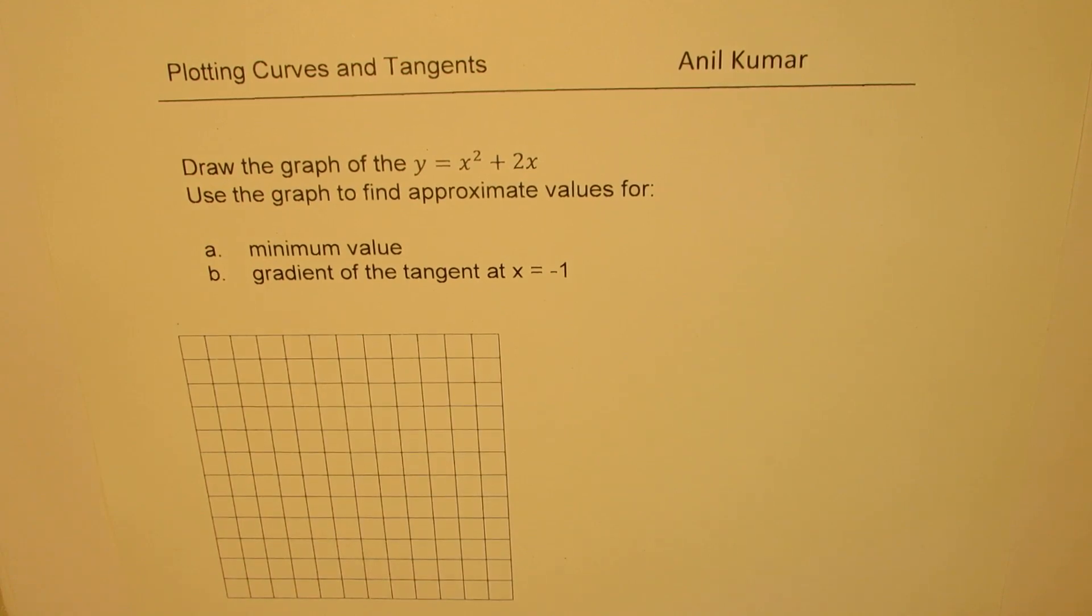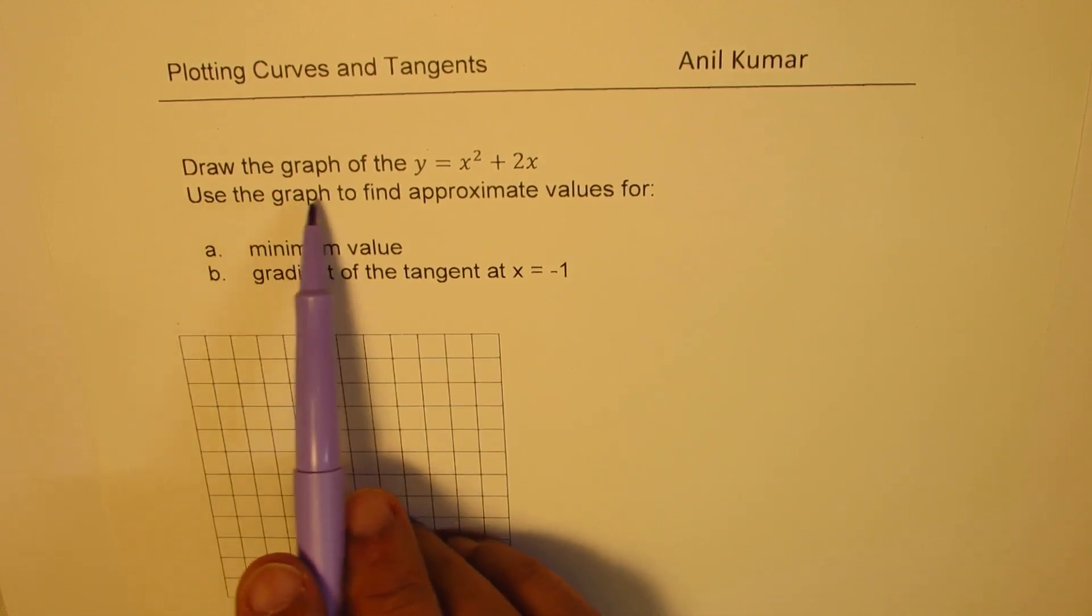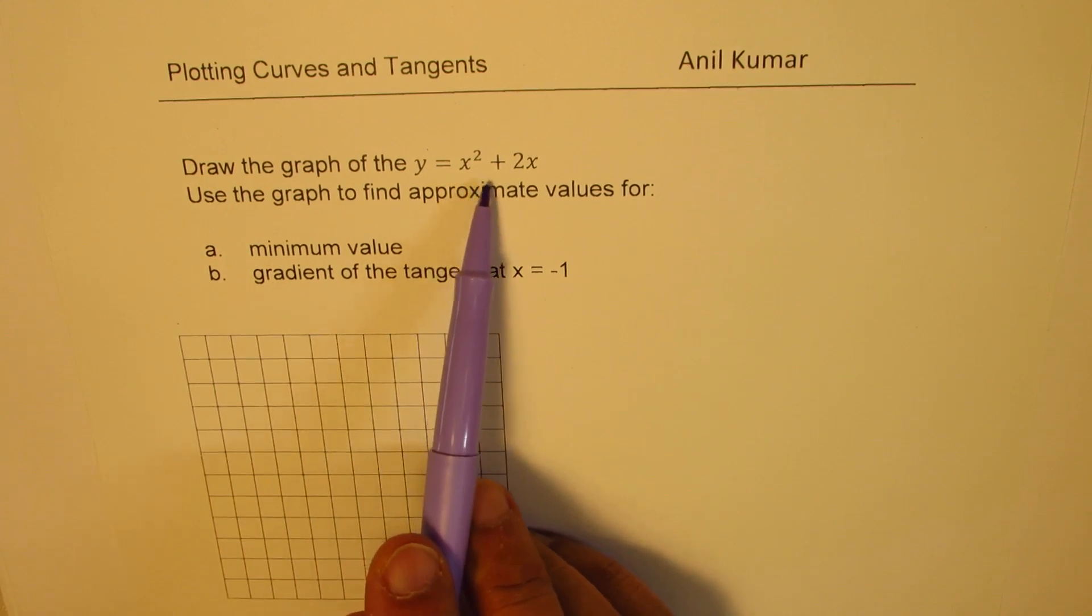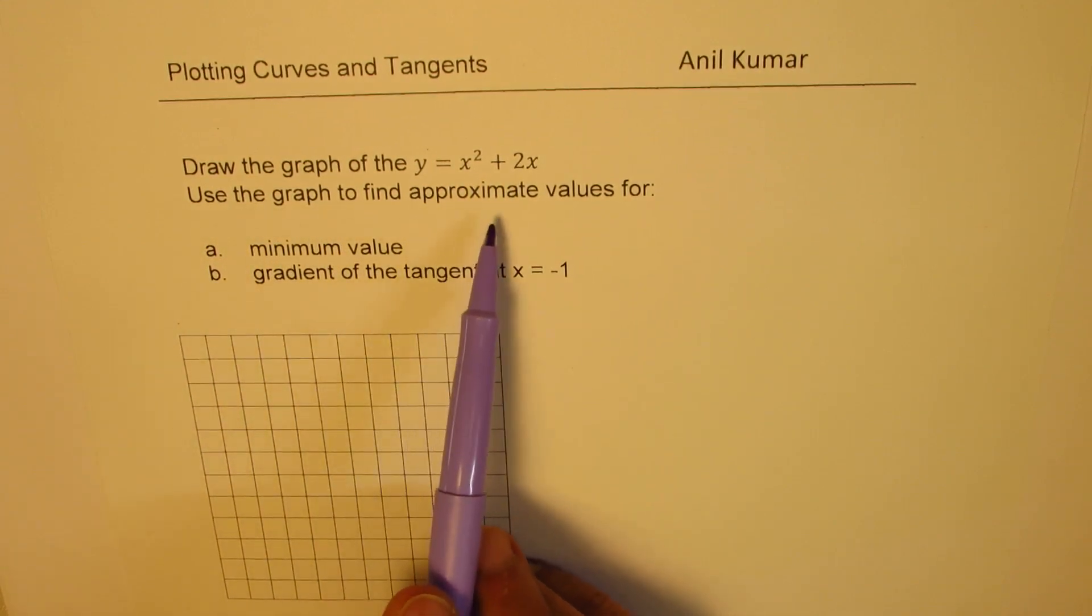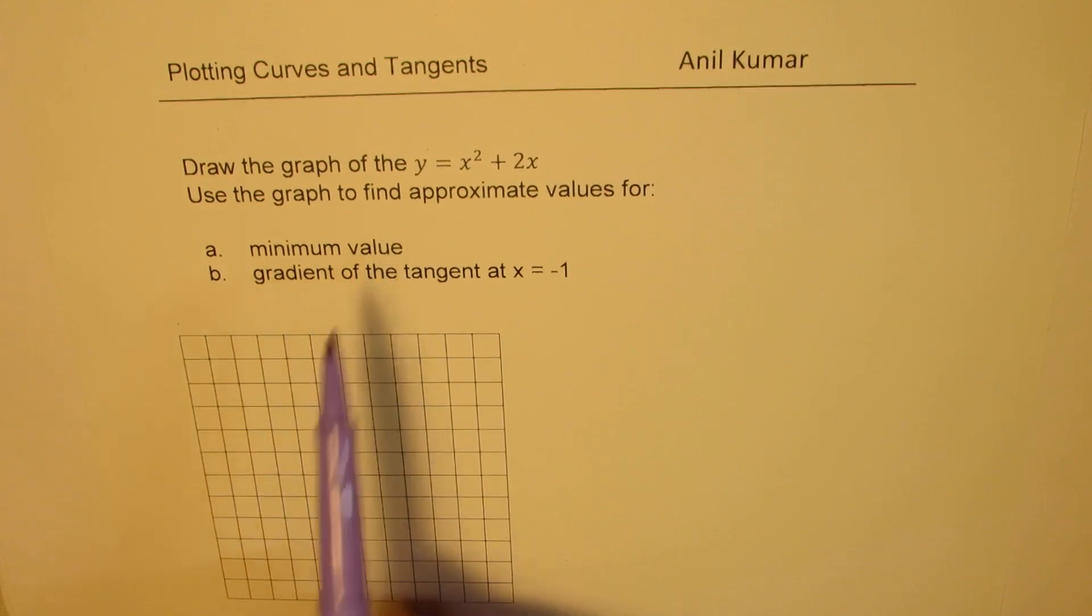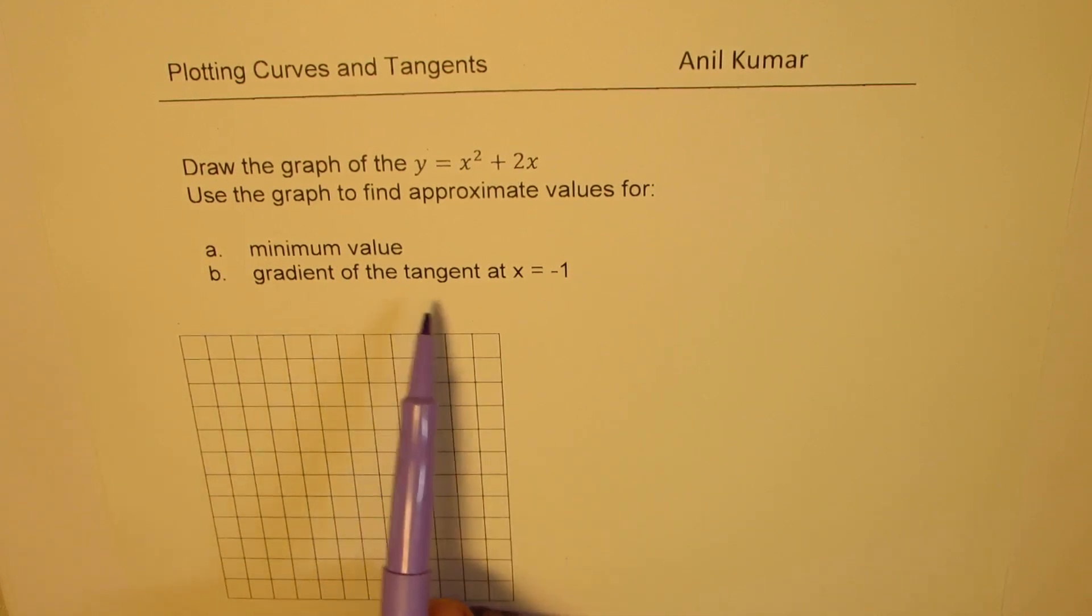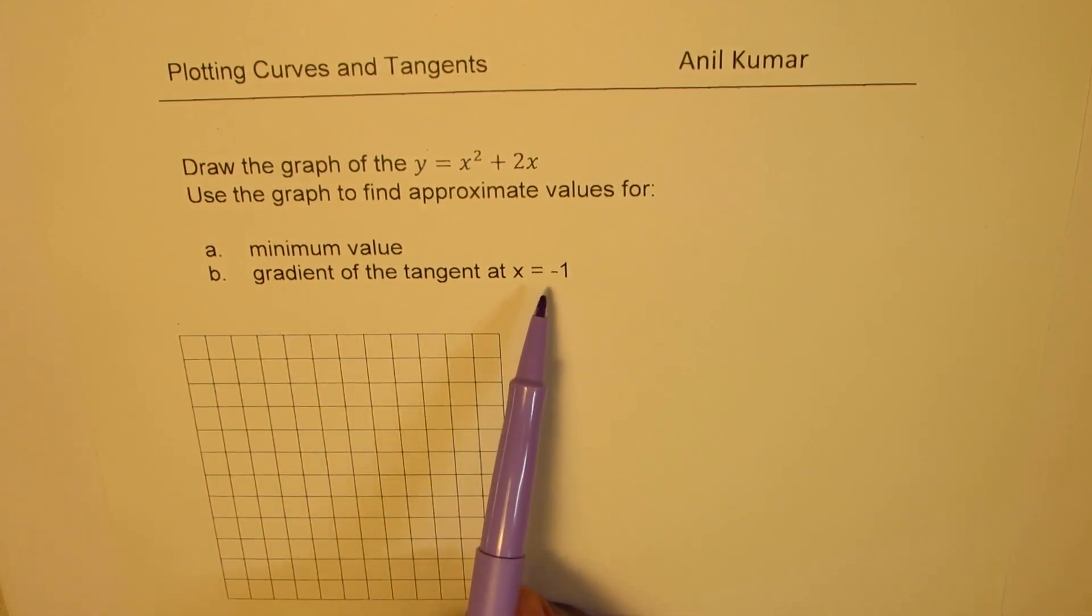We have taken a parabola. The question is: draw the graph of y = x² + 2x. Use the graph to find approximate values for minimum value and gradient of the tangent at x = -1.